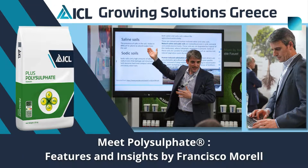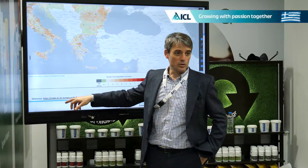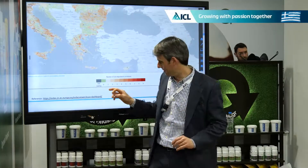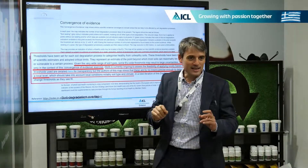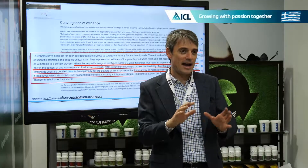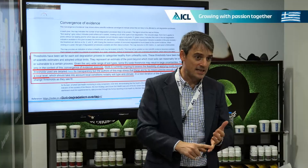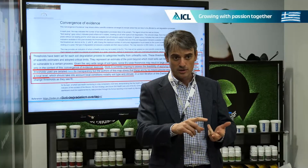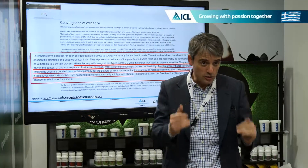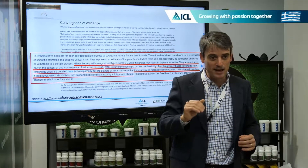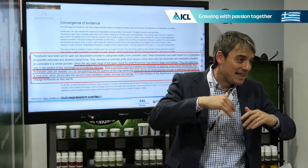If you go into the EU Soil Observatory, you see a map showing the health status of the soil. This gives you an estimate of potential problems you may have in soil: salinization, soil erosion, soil compaction, reduced soil fertility, or too much phosphorus. There are several aspects that are mapped, but this is just an indication.